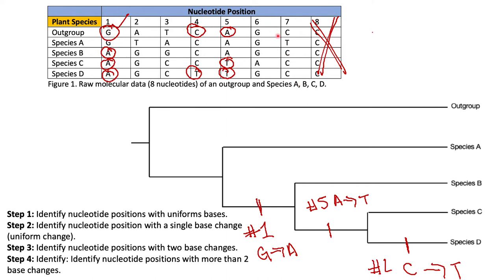Column six has G, G, G, A, G. We see only one change — at species C — but the change must be uniform, meaning it must persist in all descendants. Since it's A then back to G, it's no longer uniform, so column six does not apply to step two. Column seven has C, T, C, C, C — the change to T at species A must be uniform in all descendants, but it reverts, so column seven also does not apply to step two.